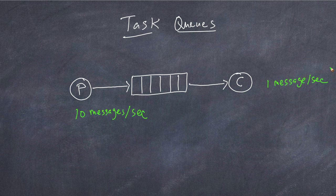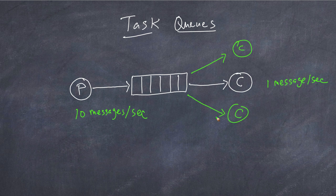By having multiple consumers we're able to consume the messages at a higher rate because we are able to dispatch multiple messages to multiple consumers. This is the general idea behind the task queue setup — to have multiple consumers to be able to consume messages at a higher rate than the publisher is publishing, in order to not delay the messages from being consumed fast enough. In the following series of lessons we will take a look at how to implement task queues in RabbitMQ.